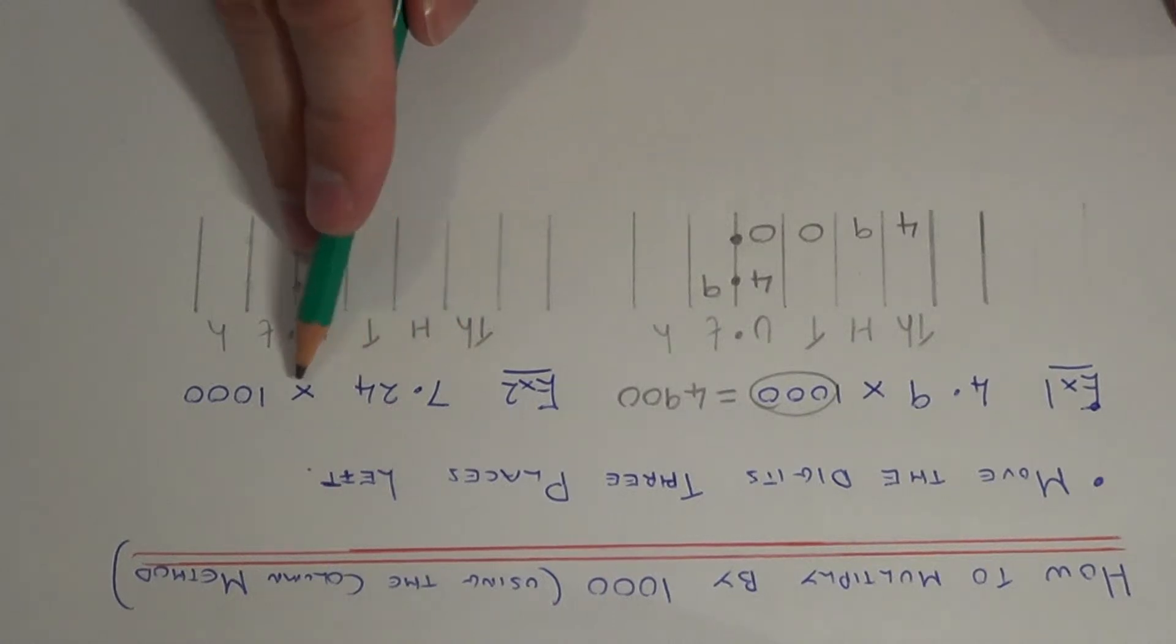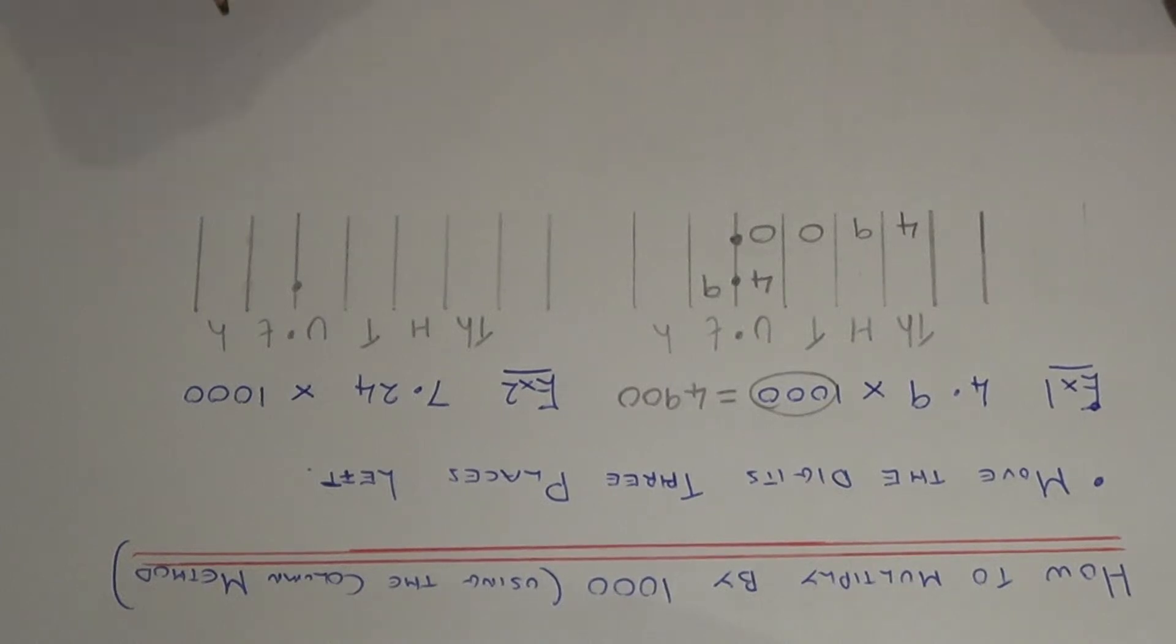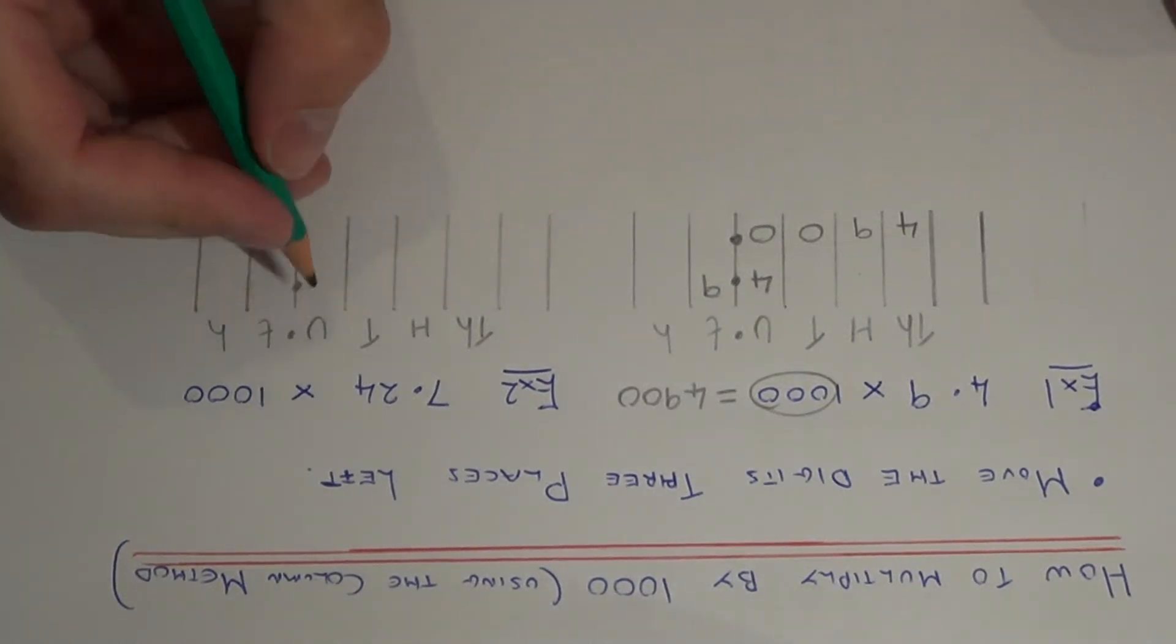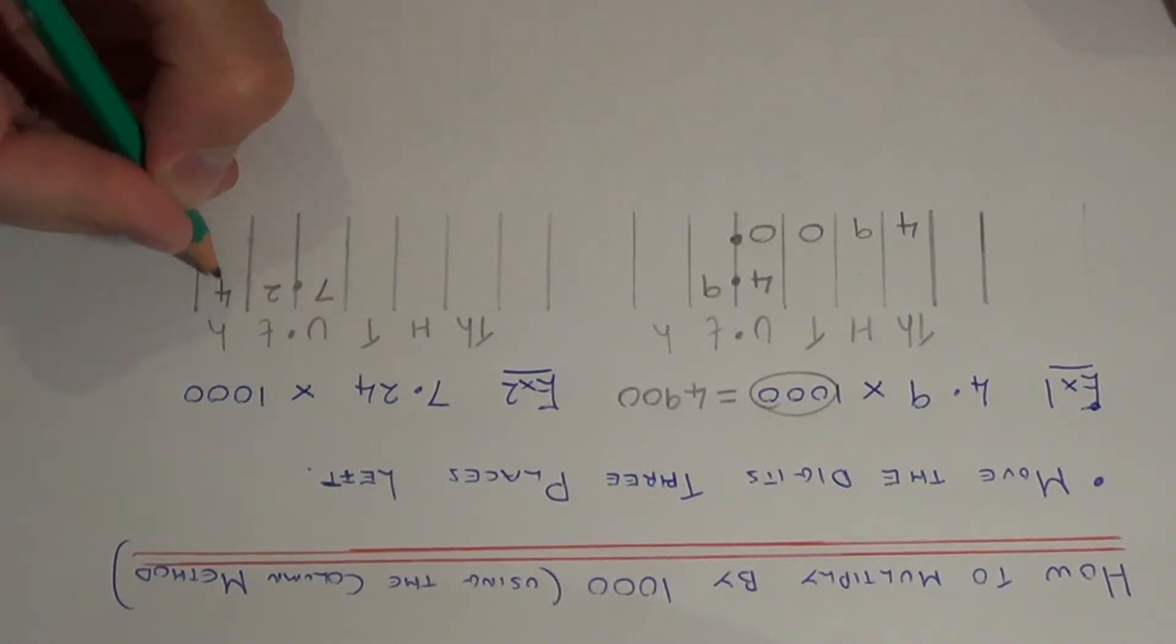So this time we have 7.24 times 1,000. So first of all, write the 7.24 into the correct column. So we have 7 units, 2 tenths and 4 hundredths.